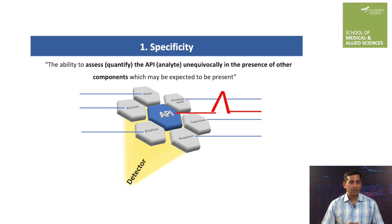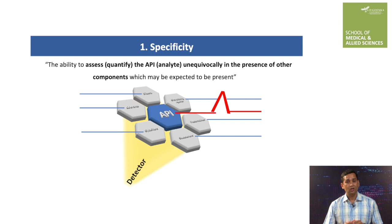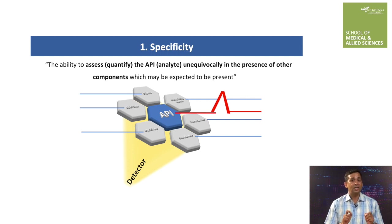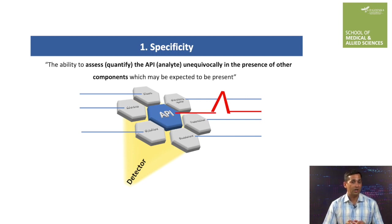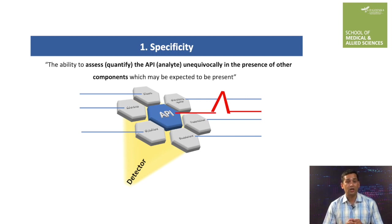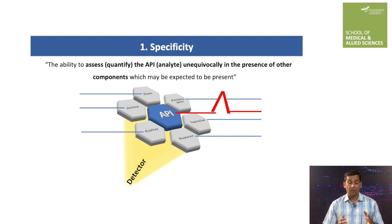The first parameter of analytical method validation is specificity. Specificity is the ability to assess the API or analyte unequivocally — that is, with full confidence and without any doubt — in the presence of other components which may be expected to be present.